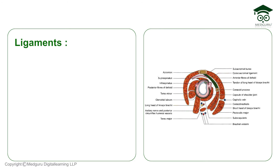Now let's talk about ligaments. There are five ligaments. One is the capsular ligament, present in every synovial joint. Then there is the glenoid labrum, which we have talked about. Then there are three more: the glenohumeral ligament, the coracohumeral ligament, and the transverse humeral ligament.